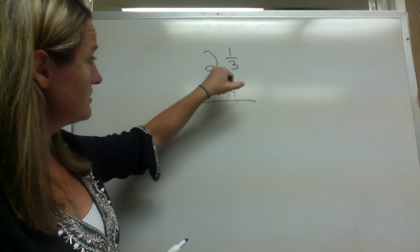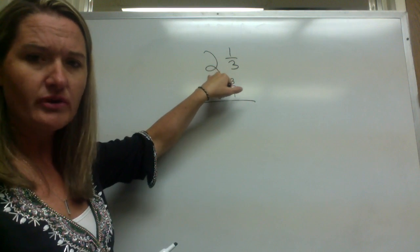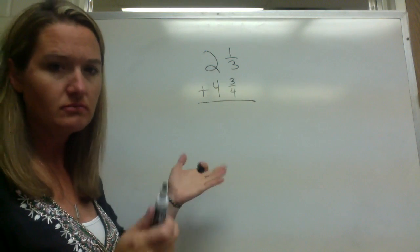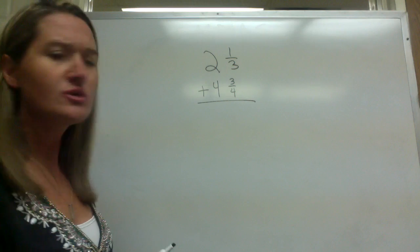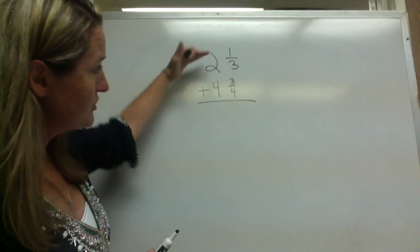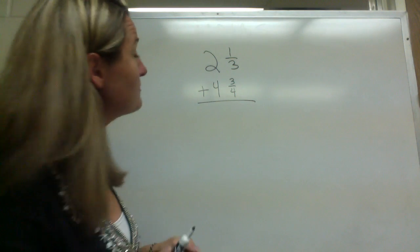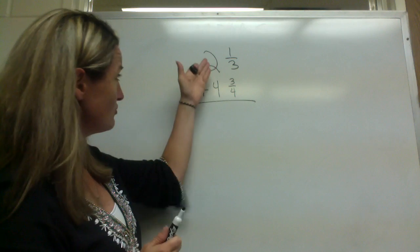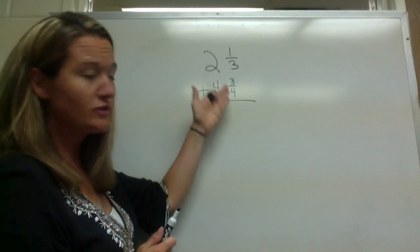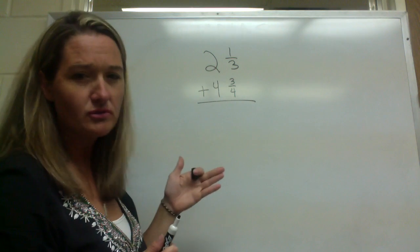Remember mixed numbers are fractions - we've got a whole number and a fraction together, it's a mixed number. When we add mixed numbers, it's very important that you write them vertically. So we have two wholes and one-third, four wholes and three-fourths.